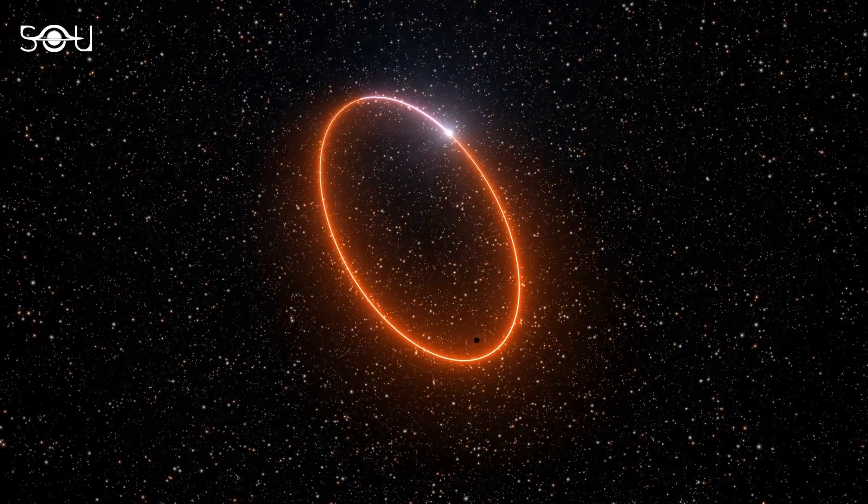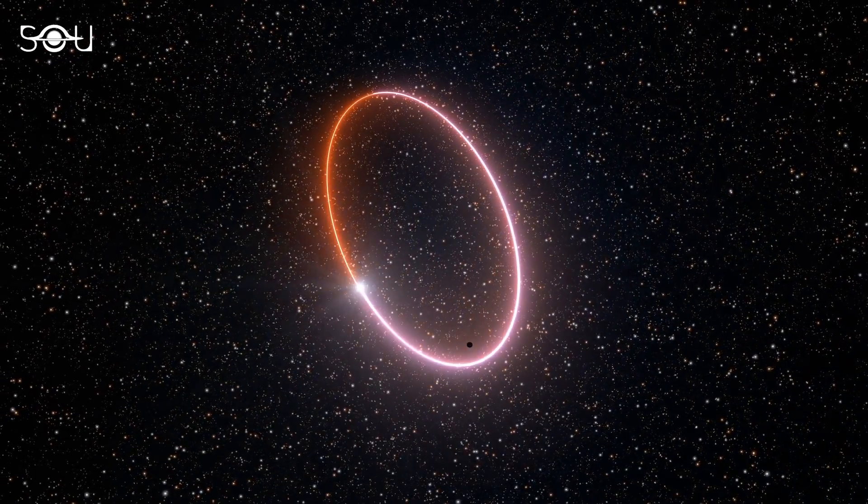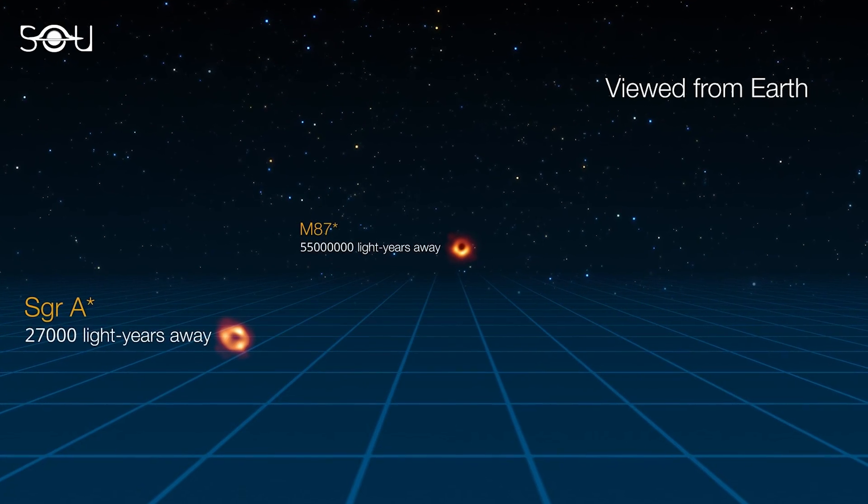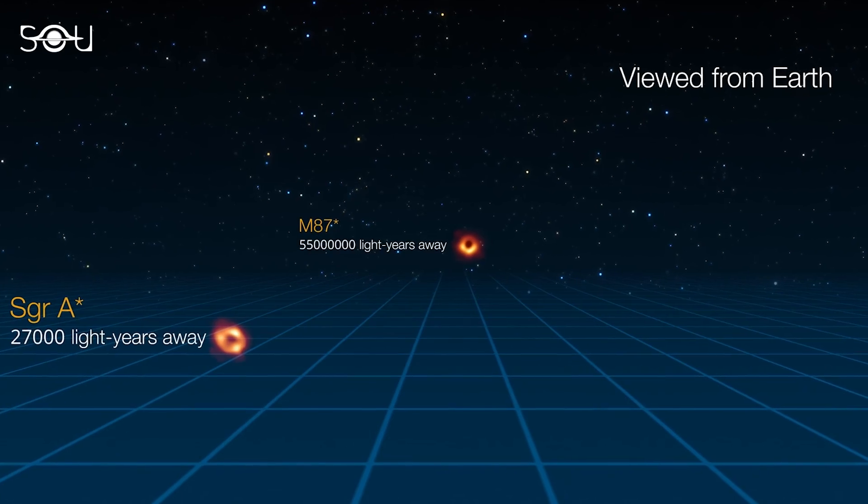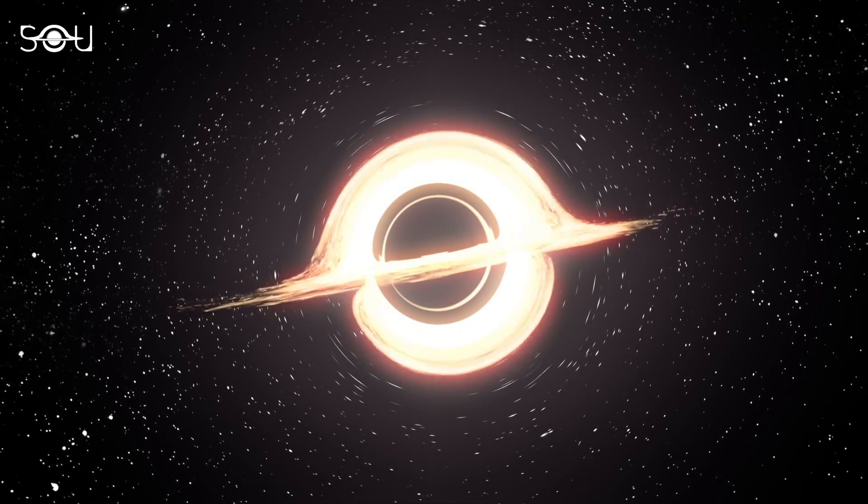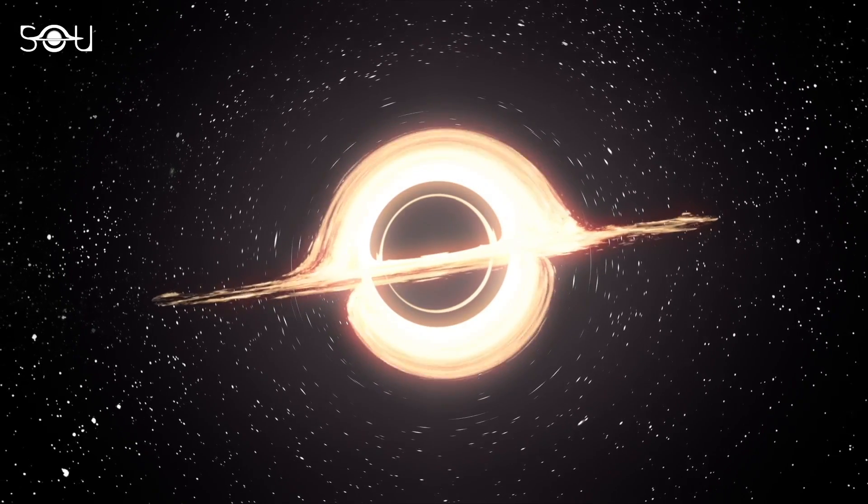But today, besides plenty of indirect evidence of their existence, we have the images of two supermassive black holes that verify our current understanding of these objects. So this means that Einstein was wrong about black holes and that such exotic objects do exist in the universe.